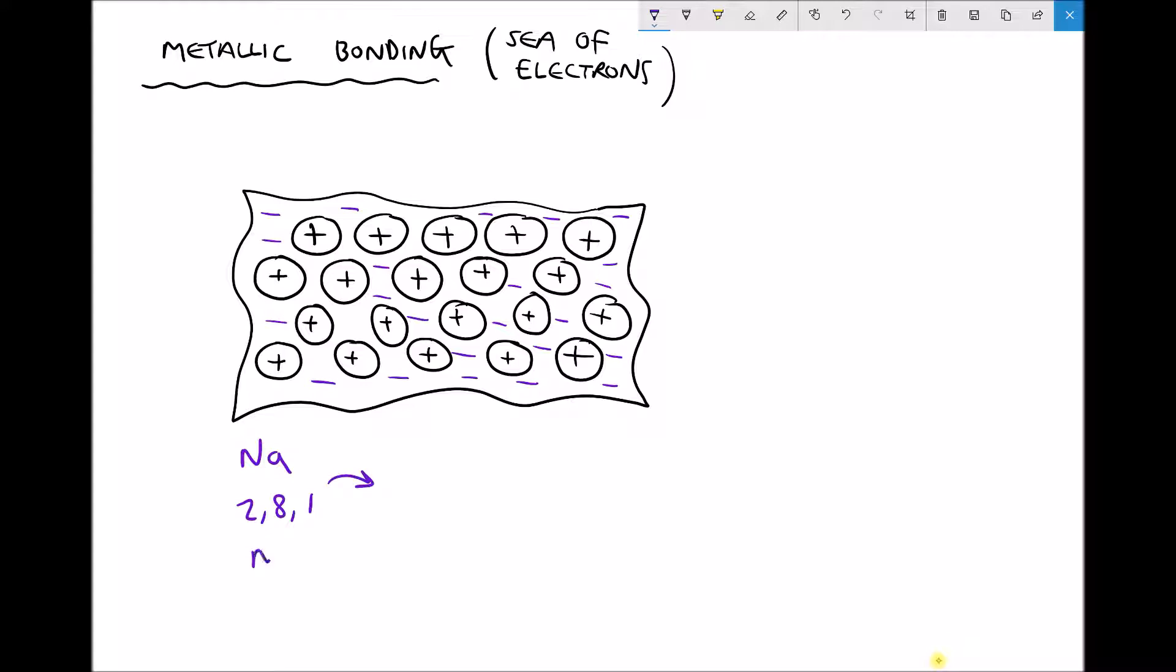We could also look at magnesium, and magnesium has the electron configuration 2,8,2. It's next to sodium, so magnesium is actually keen to lose two electrons.